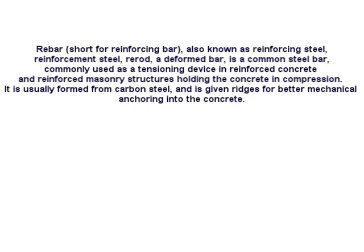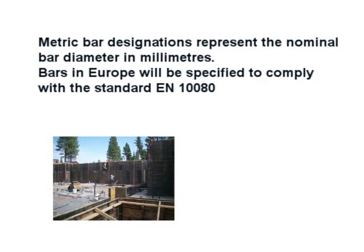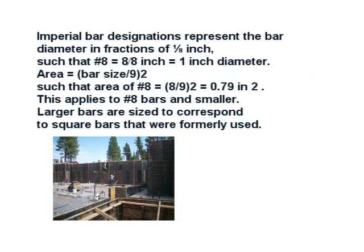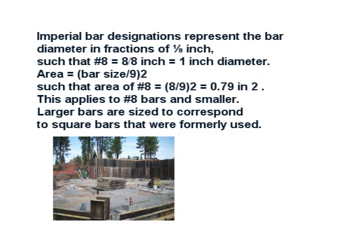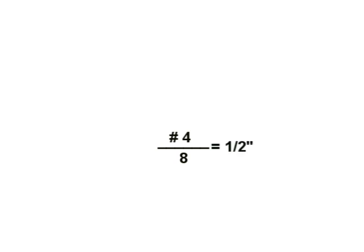Rebar is actually marked in two different types of units. One is going to be the metric system and the one that we use, of course, is the English system. The English system is really easy — that's the one we use all the time. So for example, somebody says, 'Hey man, I need to get some number 4 bar.' What the number 4 means to you is the size of the Rebar. What you have to do is grab the number 4 and divide it by 8. So number 4 divided by 8 equals one half, and therefore the size of the Rebar that you need is half an inch.